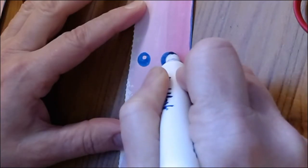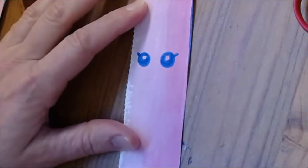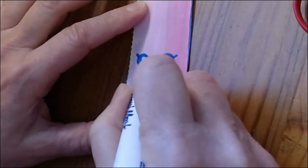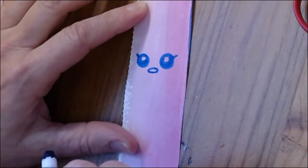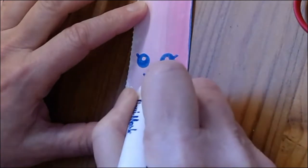Now if you want you can add little details. I'm gonna add two little eyelashes and I'm gonna add an oval nose. You can do any shape nose you want. A little happy mouth.